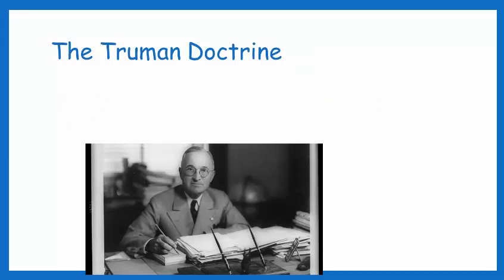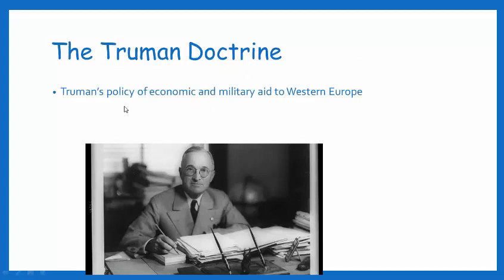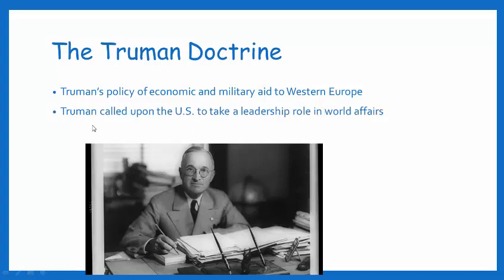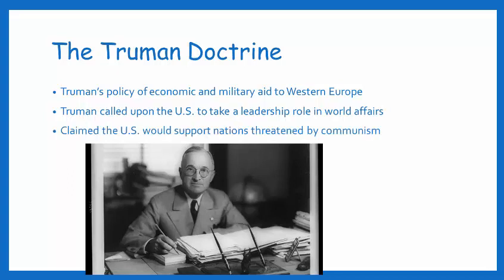Our president at this time was Harry Truman, who came up with the Truman Doctrine — what America was going to do. He said we're going to provide economic and military aid, spend money, and use our military if necessary, to the countries of Western Europe to keep them non-communist. He also stated that America would no longer be an isolated, neutral nation — we are now going to take a leadership role in world affairs. In 1947, Truman said the United States would support any nation threatened by communism, promoting our policy of containment.